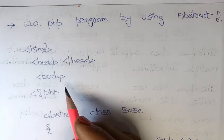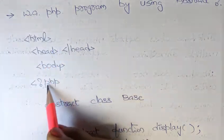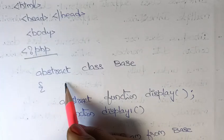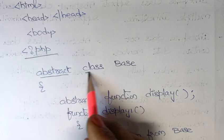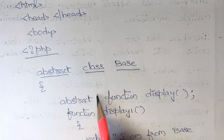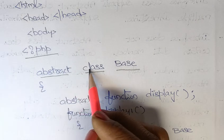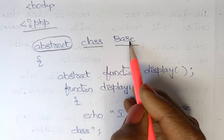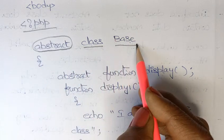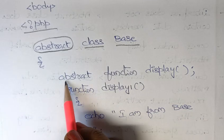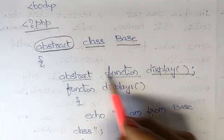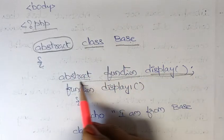Now we will see a simple program. We'll write a PHP program using abstract class. First, we write the HTML structure, then inside the body tag we use the PHP tag. Next, we define an abstract class using the keyword abstract — the class name I'm using is 'Base'. Inside the class, we define an abstract function.